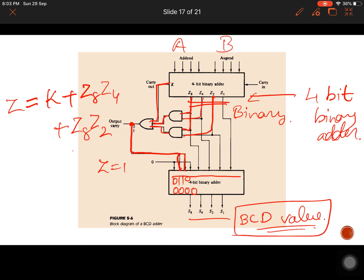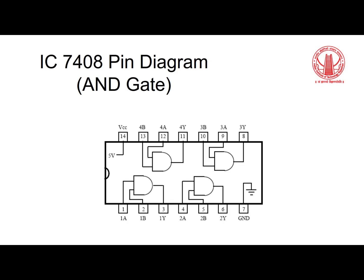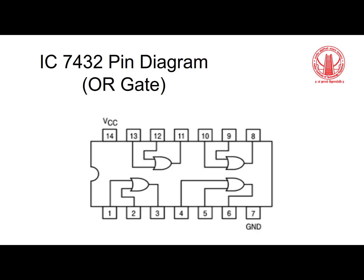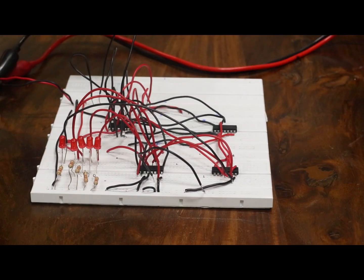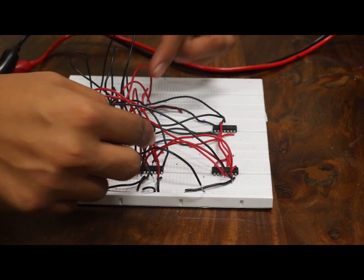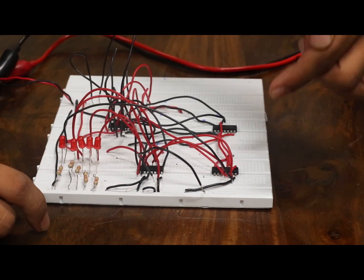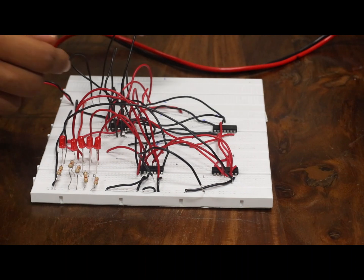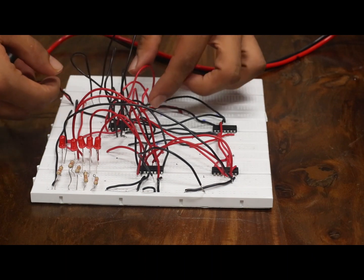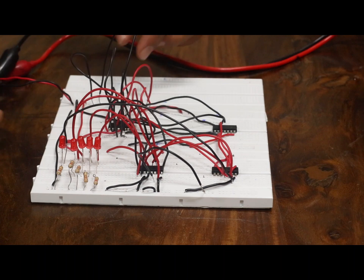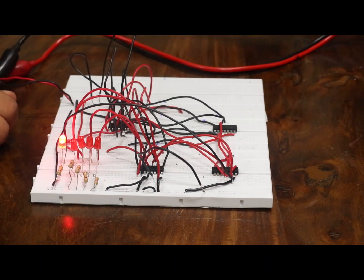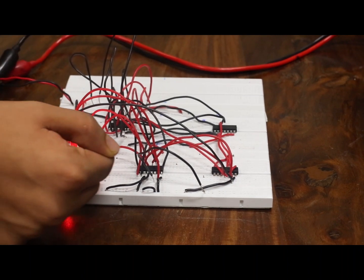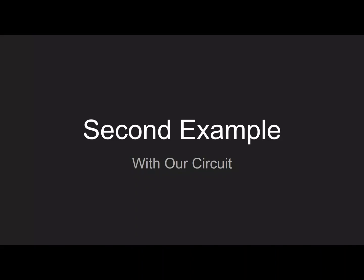Now we shall demonstrate this circuit in a lab for better clarity. This is our circuit. These are the two BCD adders, this is the AND gate, and this is the OR gate. These are our input wires — input A and input B with four wires each, and these are the LEDs for output. I have given 6 in A and 4 in B, so the output is 10 as it should be. Hence the adder works perfectly.